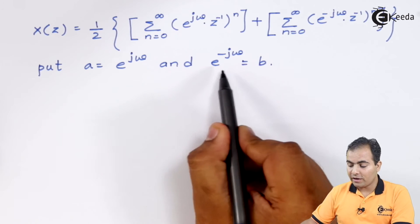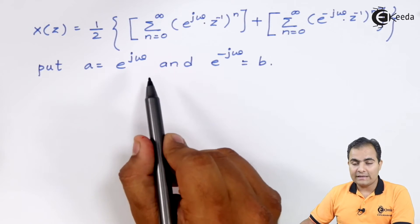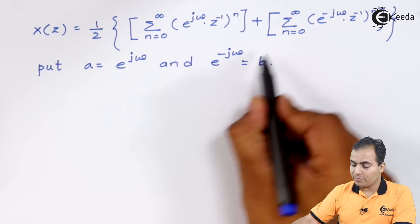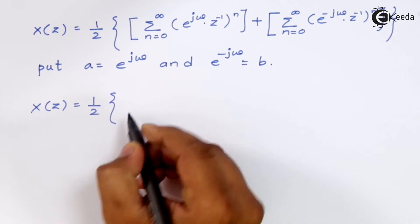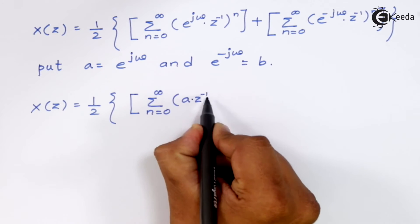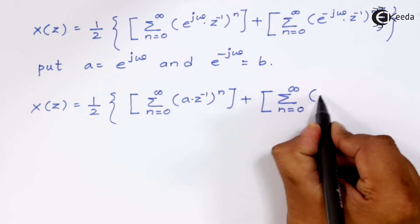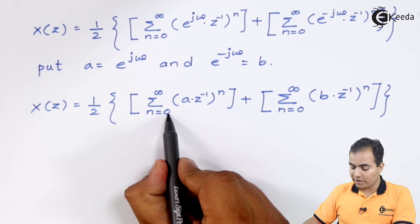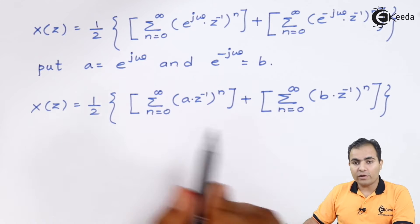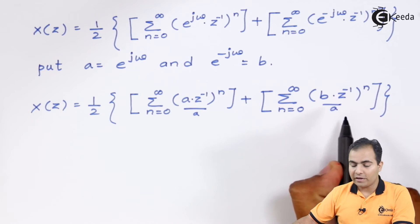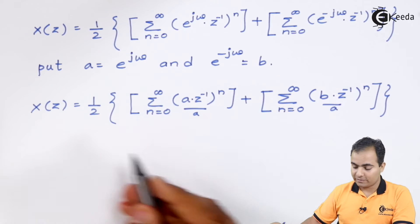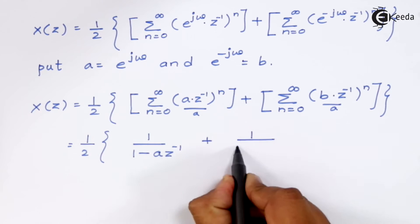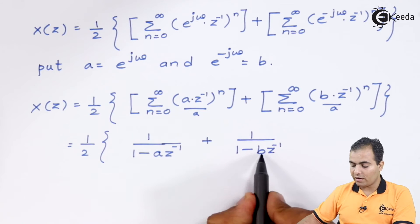I am replacing e^(jω) by a and e^(−jω) by b to avoid difficulties in computation. The values inside the summations are a·z^(−1) and b·z^(−1) respectively, which are both of the form a^n. Applying the formula 1/(1−a), and then multiplying numerator and denominator by z, gives us the substituted result using those values of a and b.